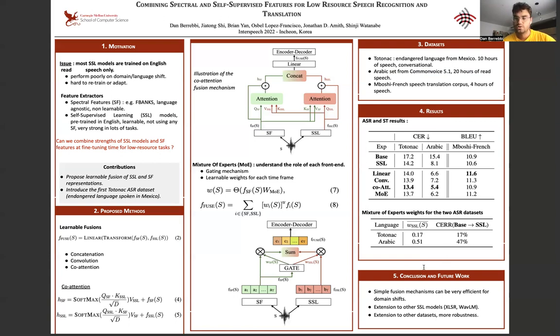So in conclusion, a simple fusion mechanism can be very efficient for addressing domain shifts and using self-supervised learning models efficiently. And we'll extend this work to more SSL models, including multilingual ones, such as XLSR. And we'll also extend to more datasets to prove the robustness that this is robust to most of the datasets. Thank you for listening and don't hesitate to ask any question.